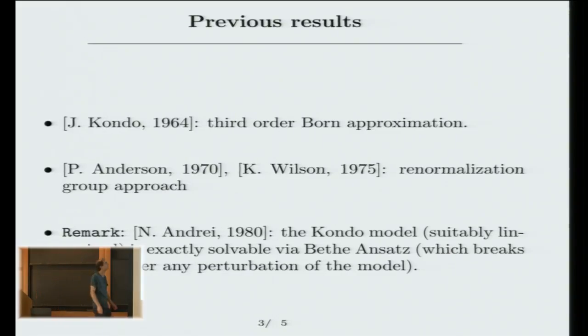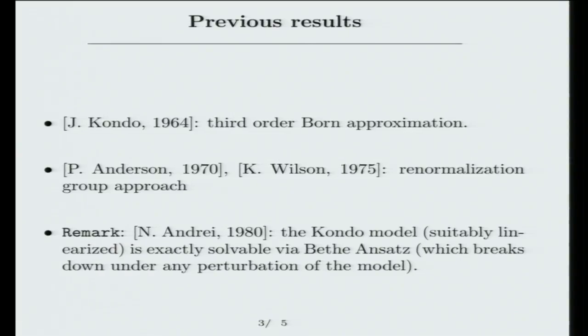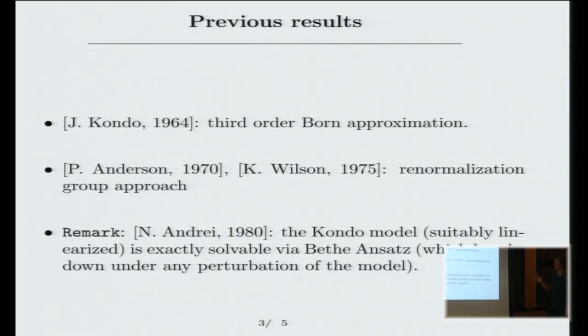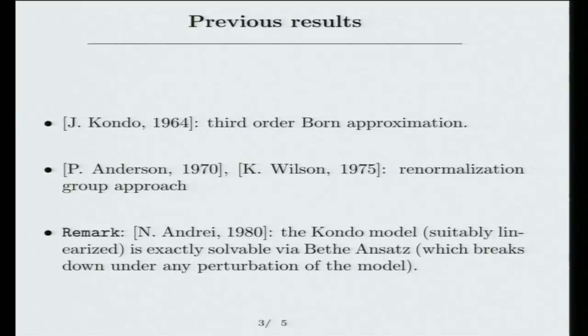Let me tell you about what was known. This model I mentioned was introduced by Kondo in 1964. The computations that he did were a so-called Born approximation. The computations were quite enlightening. Unfortunately, they're not rigorous. This is why there was still work to do after Kondo. This problem was also addressed by Phil Anderson in 1970 and later by Ken Wilson, later and more fully by Ken Wilson. I'm assuming it's not the same Wilson as the previous talk. I'm guessing the previous Wilson was David Wilson. Anyways, this is Ken Wilson. And they developed a renormalization group approach to look at this.